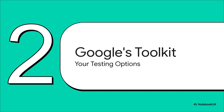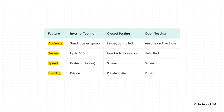Thankfully, you are not going into this blind. Google Play actually gives you a professional-grade toolkit to make sure your app is stable and ready for prime time before the public ever even sees it. You've basically got three different tracks for testing: internal, closed, and open. And what I want you to notice right away is that internal testing is by far the fastest — we're talking minutes — and it's totally private. That combo makes it the absolute perfect place to start.